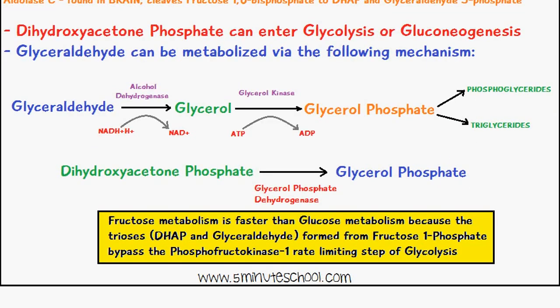The final point is that fructose metabolism is faster than glucose metabolism because the trioses dihydroxyacetone phosphate and glyceraldehyde, formed from fructose-1-phosphate, bypass the phosphofructokinase-1 rate-limiting step of glycolysis.